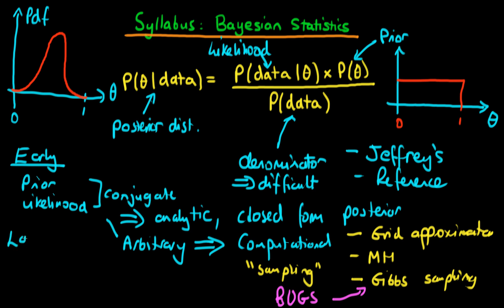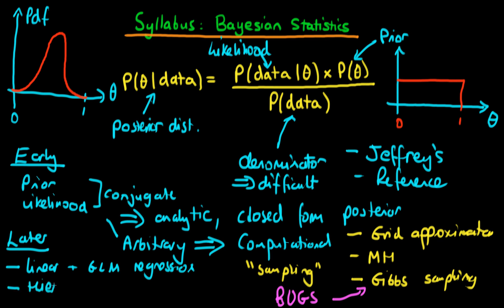Later on, we're going to talk about some more advanced concepts. We're going to talk about how linear and, in general, generalized linear models of regression can make use of Bayesian statistics, and how these Bayesian methods are, in my view, a lot better than classical statistics for the case of regression. We're also going to talk about what is known as hierarchical models, which essentially involves placing a prior on prior parameters.